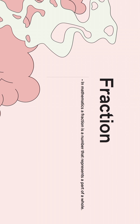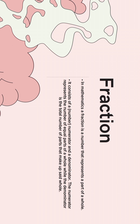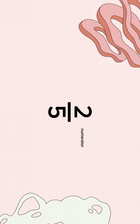In mathematics, a fraction is a number that represents a part of a whole. It consists of a numerator and a denominator. The numerator represents the number of equal parts of a whole, while the denominator is the total number of parts that make up said whole. The numerator is the top number, and the denominator is the bottom number.